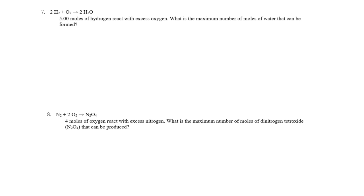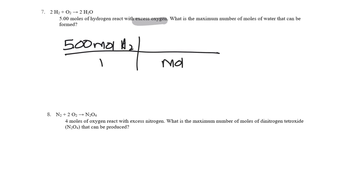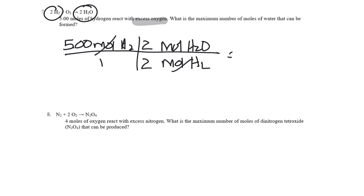Question seven: five moles of hydrogen reacts with excess oxygen — remember, excess means we can ignore it for the math, but there's plenty of oxygen to react. What is the maximum number of moles of water that can be produced? Start with five moles of hydrogen over one. Moles of hydrogen comes down; I want to get to moles of water. There's a two next to water and a two next to hydrogen — units cancel, and I can make five moles of water.